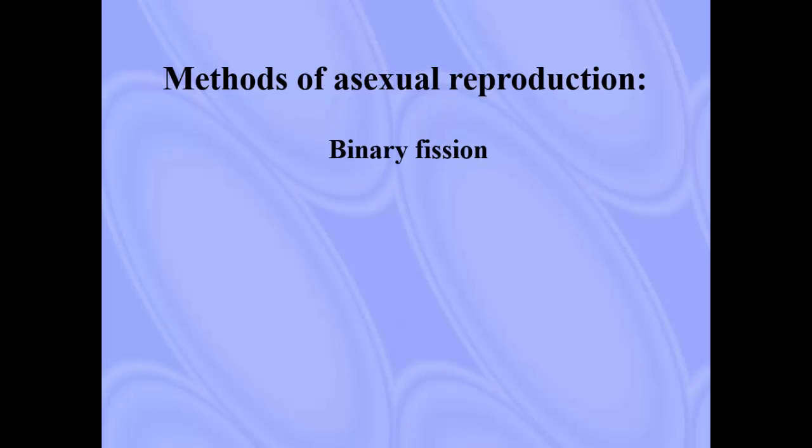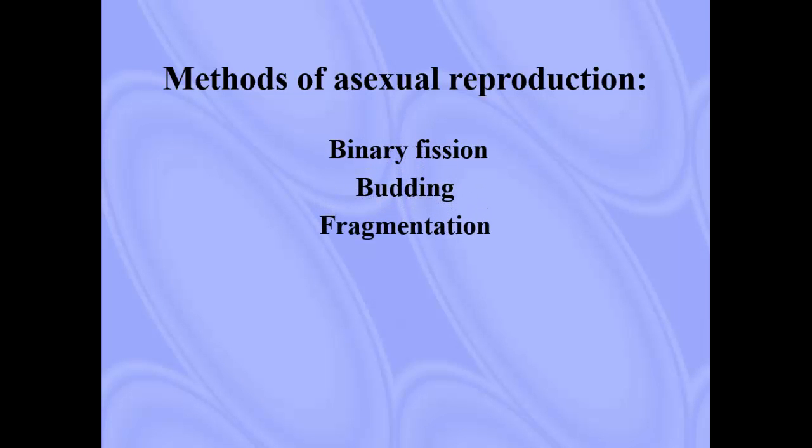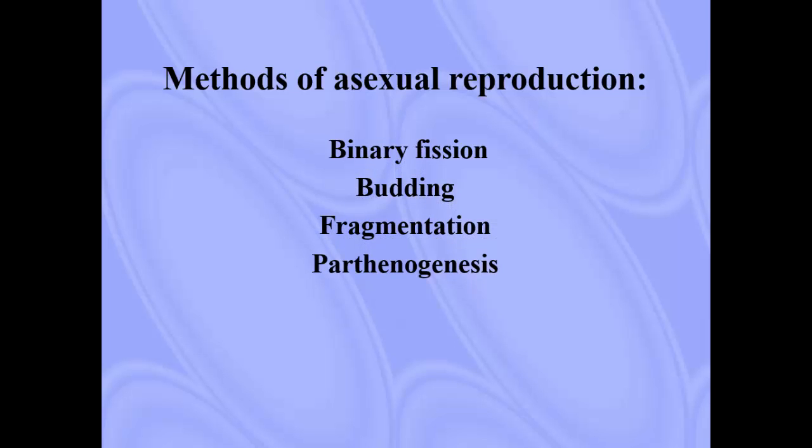There are four methods of asexual reproduction. They are binary fission, budding, fragmentation, and parthenogenesis.